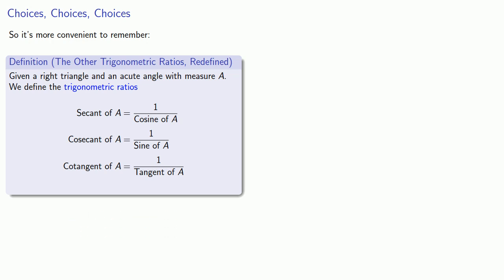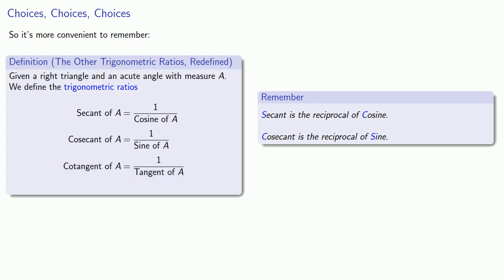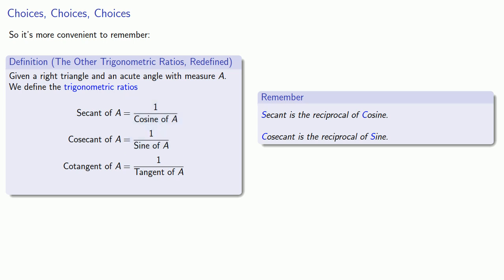A helpful thing to remember is that secant, the s-function, is the reciprocal of cosine, the c-function, and cosecant, the c-function, is the reciprocal of sine, the s-function. C and s always go together, except for cotangent and tangent — you just have to remember that cotangent has something to do with tangent, and since everything else is defined in terms of a reciprocal, it's going to be the reciprocal of tangent.